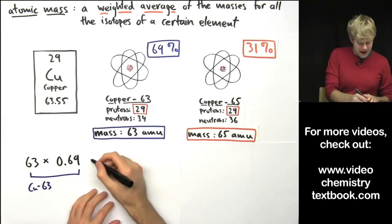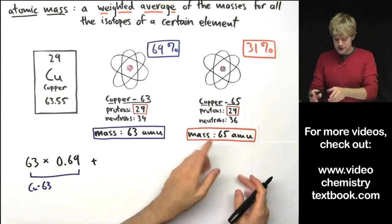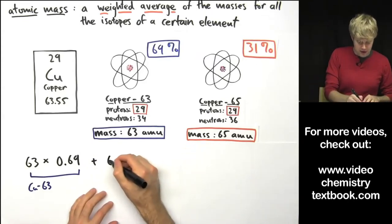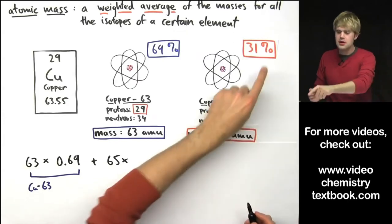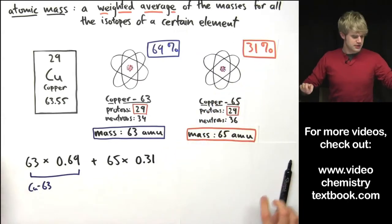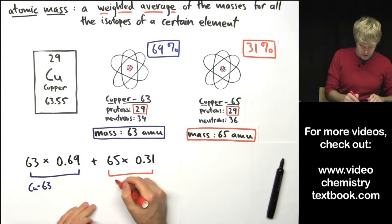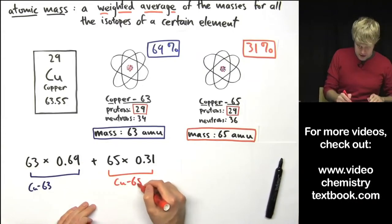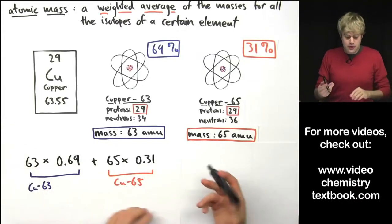Now I'm going to add that to copper-65. I'm going to do 65 AMU times its abundance 0.31 expressed as a decimal. Just to keep track of this, I'll put copper-65 here. Now the math really isn't that hard.